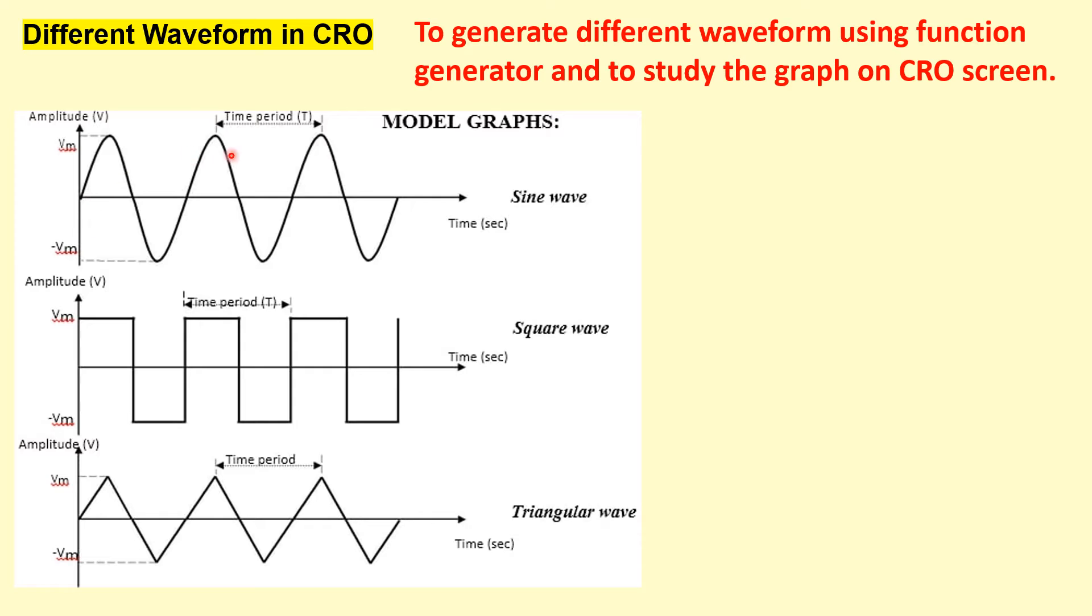And these are the typical graphs for sine wave, square wave, and this is for the triangular wave. The wavelength is to complete one cycle and the distance is one wavelength and the time is the time period for completing this one cycle. And using this wavelength and time period we can also find out the frequency.